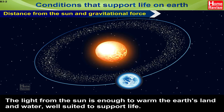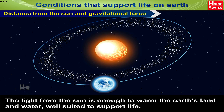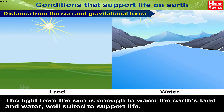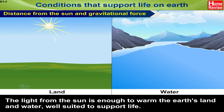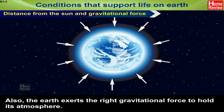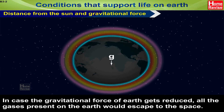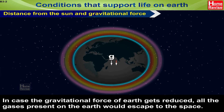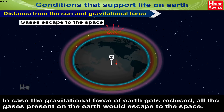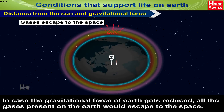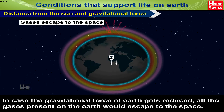The light from the Sun is enough to warm the Earth's land and water, well suited to support life. Also, the Earth exerts the right gravitational force to hold its atmosphere. In case the gravitational force of Earth gets reduced, all the gases present on the Earth would escape to space.